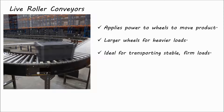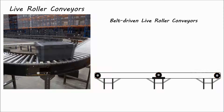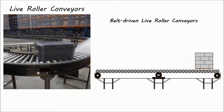Live roller conveyors are most commonly either belt driven or chain driven. Belt driven live roller conveyors utilize a flat, round, or v-belt with rollers on top. Unlike standard belt conveyors, belt driven live roller conveyors are not recommended for transporting items to various levels.